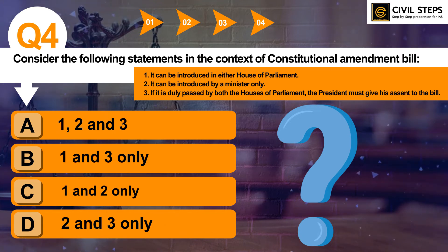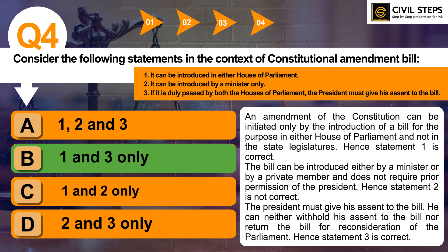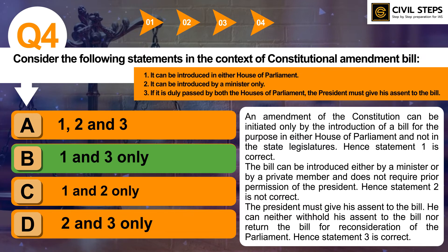The correct answer of this question is Option B, 1 and 3 only. An amendment to the Constitution can be initiated only by the introduction of a Bill in either House of Parliament and not in the State Legislature — hence Statement 1 is correct. About Statement 2, the Bill can be introduced either by a Minister or by a private member and does not require prior permission of the President — hence Statement 2 is not correct. About Statement 3, the President must give his assent to the Bill; he can neither withhold his assent nor return the Bill for reconsideration of Parliament — hence Statement 3 is correct.